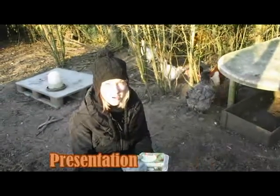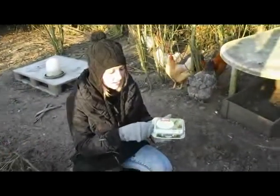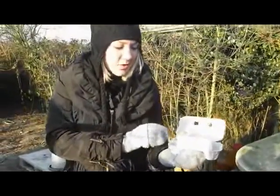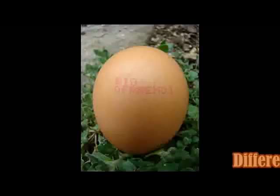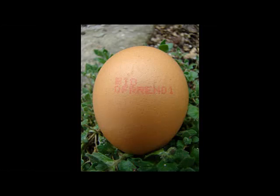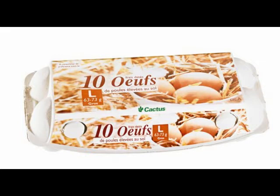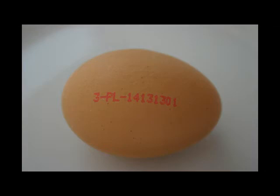Let us tell you about egg origins. This packaging suggests that the hens have been bred in free range, whereas this code indicates that hens have been bred in battery farming. The code 0 is used for organic eggs. The code 1 is used for eggs from free range hens. The code 2 is used for eggs from hens bred on a grid. The code 3 is used for eggs from hens raised in battery farming.